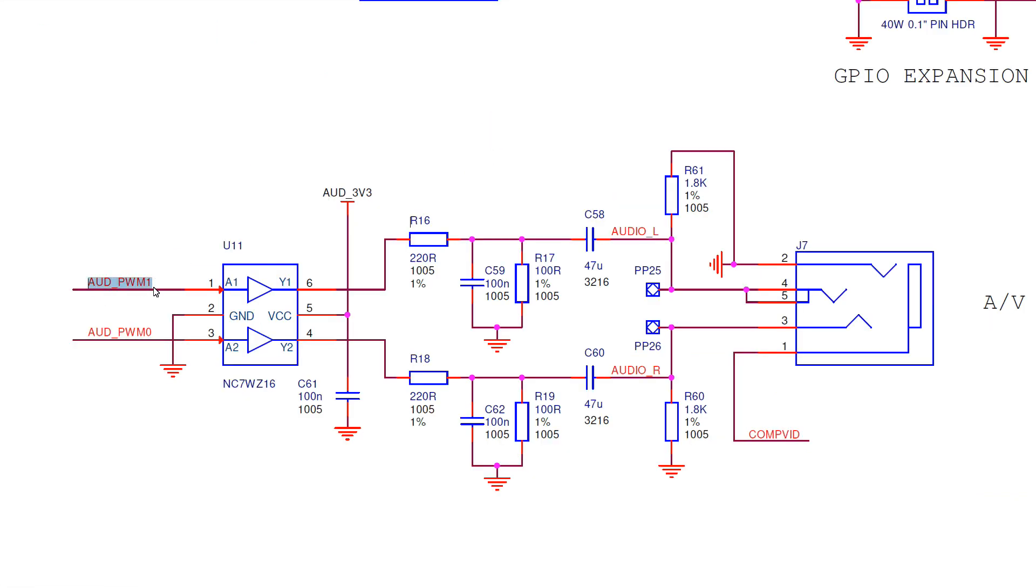The buffer just copies the signal. When the PWM is 3.3 volts, the output on the buffer is 3.3 volts. When the pin is 0 volts, the output on the buffer is 0 volts.